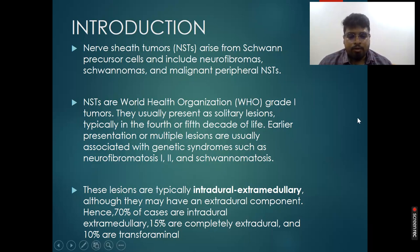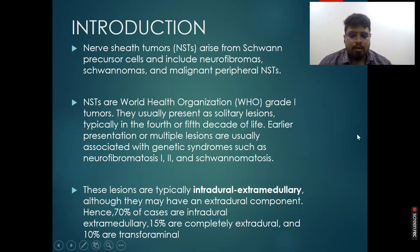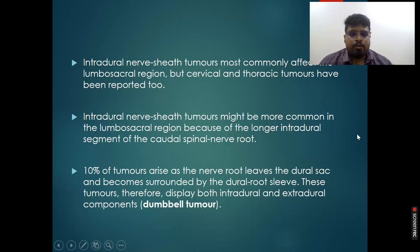These are typically intradural and extramedullary, although they may have an extradural component. 70% of cases are intradural extramedullary, 15% are completely extradural, and 10% are transforaminal. Intradural nerve sheath tumors most commonly affect the lumbosacral region, but cases of cervical and thoracic tumors have also been reported. They may be more common in the lumbosacral region because of the longer intradural segment of the caudal spinal nerve root.